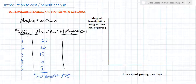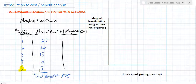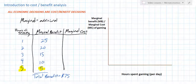The marginal benefit decreases the more hours I spend gaming. However, every hour of gaming provides me with positive marginal benefit — I do enjoy the fifth hour, and I'm willing to pay $5 for it. So you may ask, how many hours of gaming should I do? If you only consider the marginal benefit, the answer would be five hours of gaming because I get $5 worth of happiness from the fifth hour. However, economic decisions must also consider the marginal cost.